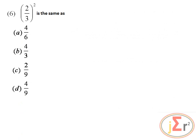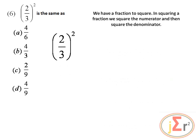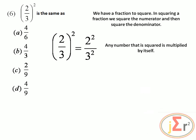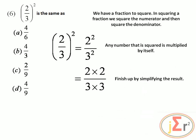In this problem we need to square the fraction 2/3. When squaring a fraction, we square the numerator and square the denominator, resulting in 2² over 3². Any number squared is multiplied by itself: 2 × 2 = 4 and 3 × 3 = 9. So we have 4 ninths. The correct answer is option D.